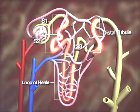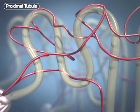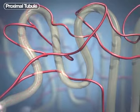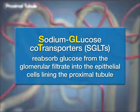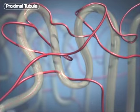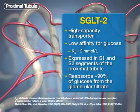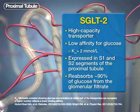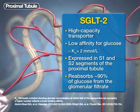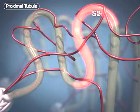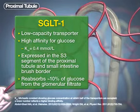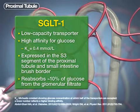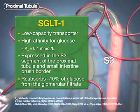Normally, virtually all of that glucose is reabsorbed in the proximal tubule of the nephron. This glucose reabsorption process is mediated by the sodium glucose co-transporters, or SGLTs, which move glucose from the tubular lumen into the epithelial cells lining the tubule. Approximately 90% of the glucose is reabsorbed by high-capacity, low-affinity SGLT2, specifically expressed in the S1 and S2 segments of the proximal tubule. The remaining 10% is reabsorbed by low-capacity, high-affinity SGLT1, expressed in the S3 segment.